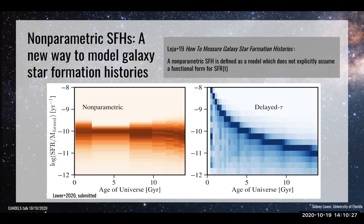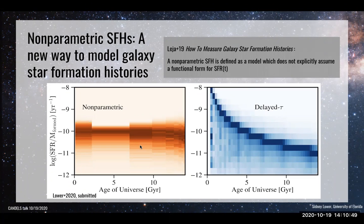Whenever I say non-parametric star formation history, I mean any star formation history that does not have an explicitly assumed functional form, whereas parametric ones do. This is a PDF of draws from the prior for both models — I think the color bar got cut off.